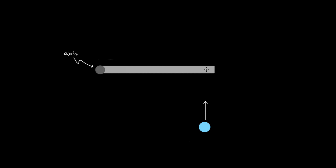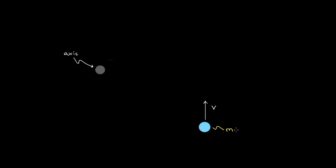You might be wondering: how do you calculate this exactly? How do you define what we mean by the fact that this ball has angular momentum? Let's define this exactly. Say this ball has a velocity v, a mass m, and the distance from the axis to the ball is little r. The angular momentum of a point mass — L is the symbol for angular momentum — is m times v times r. M times v is just momentum, so we have to turn this into angular momentum by multiplying by r.